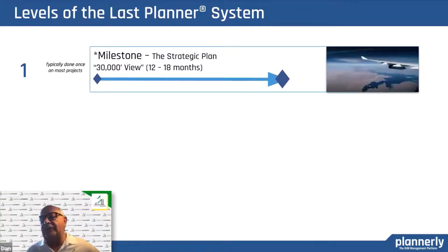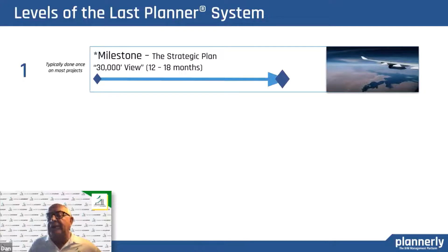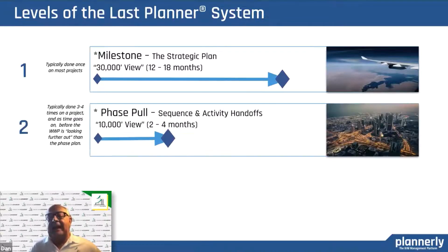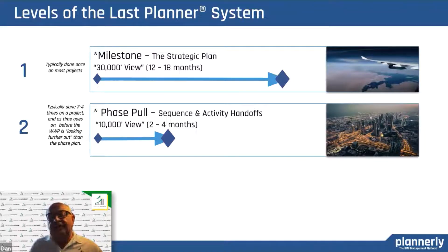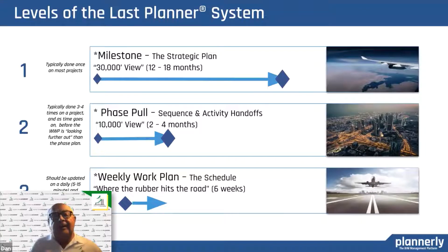Phase planning operates at three levels. First, the milestone level — the strategic plan, the 30,000-foot plan. You might think that means 50% DD or 95% DD, but there are probably some better milestones along the way, having to do with decisions or approvals by a government agency. Then there's the phase pull — for a much smaller, more manageable chunk of work. In construction it's two to four months; in design it may be two to four weeks. Then once you have a phase pull with all the different steps involved, you drop down to a weekly work plan for accountability and a weekly check-in.